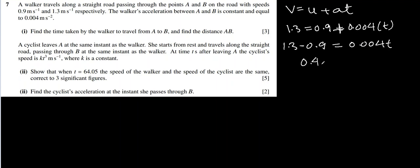Okay, so they say in the first part find the time taken by the walker to travel from A to B, and for that what should we do? We should use V equal to U plus AT. So V they have given 1.3 meters per second. U is given 0.9. Acceleration they have given 0.004, and time they are asking us to find out. So 1.3 minus 0.9 equal to 0.004T, that will be 0.4 equal to 0.004. So time comes out to be 0.4 divided by 0.004, which is 100 seconds. So they are asking the time taken, time taken is 100 seconds to reach from A to B.